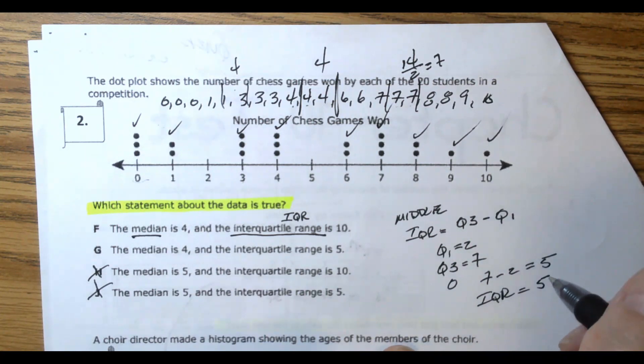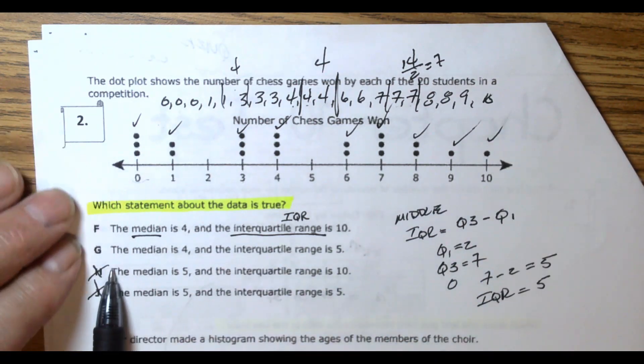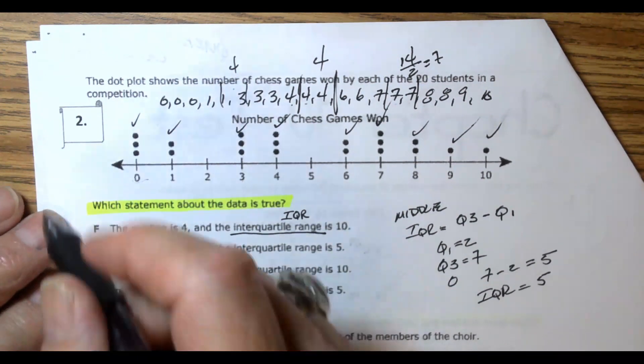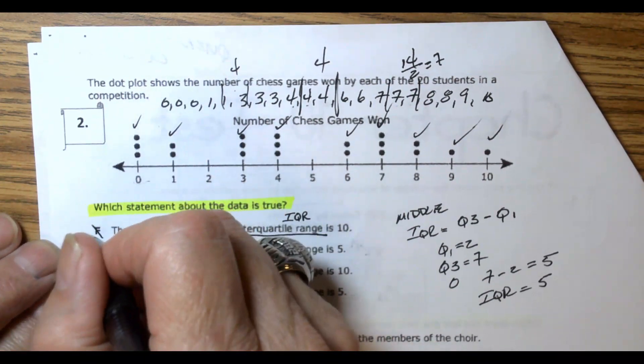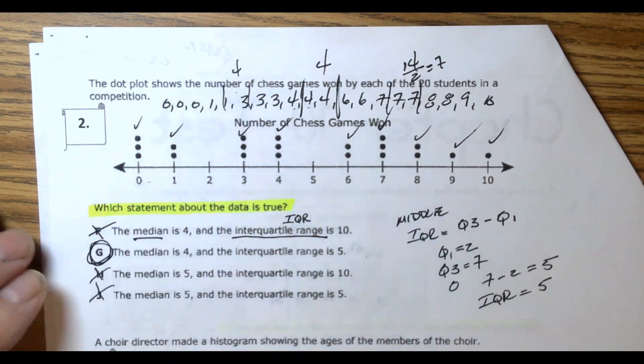The answer choice showing IQR of 10 is not right. So our correct answer is G.